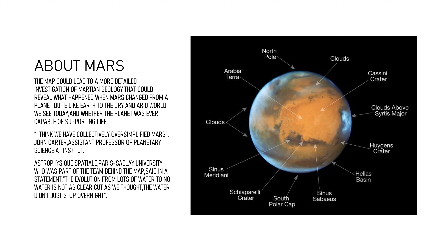The map could lead to a more detailed investigation of Martian geology that could reveal what happened when Mars changed from a planet quite like Earth to the dry and arid world we see today, and whether the planet was ever capable of supporting life. This mineral deposits map could provide more detail about Martian geology and help us understand how Mars transformed.